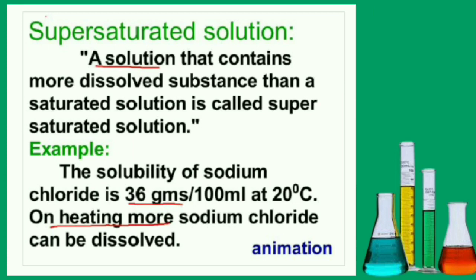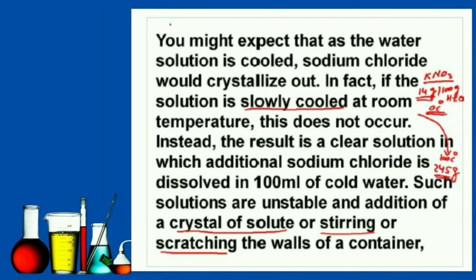Supersaturated solution: a solution that contains more dissolved substances than a saturated solution is called a supersaturated solution. The solubility of sodium chloride is 36 grams per 100 ml at 20 degrees Celsius. When heated, more sodium chloride can be dissolved. You might expect that as the water solution is cooled, sodium chloride would crystallize out. In fact, if the solution is slowly cooled to room temperature, this does not occur. Instead, the result is a clear solution in which additional sodium chloride remains dissolved. Such solutions are unstable — addition of a crystal of solute, or stirring, or scratching the walls of the container can trigger crystallization.